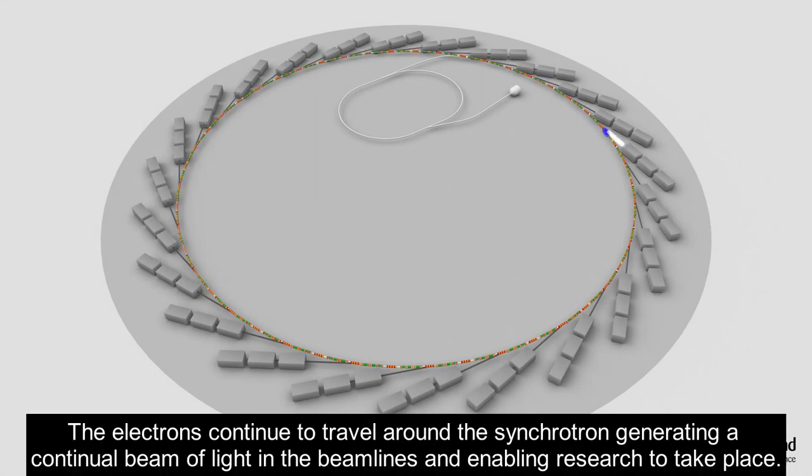The electrons continue to travel around the synchrotron, generating a continual beam of light in the beamlines and enabling the research to take place.